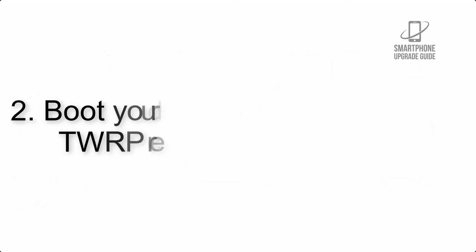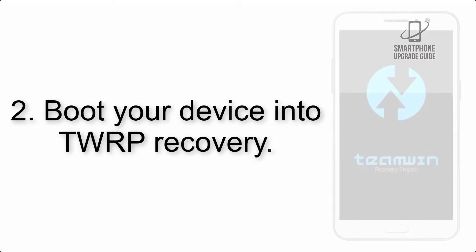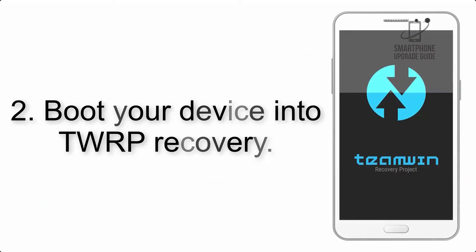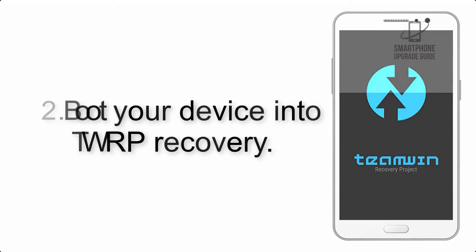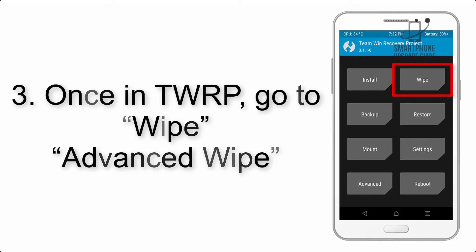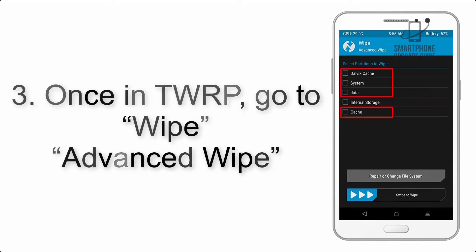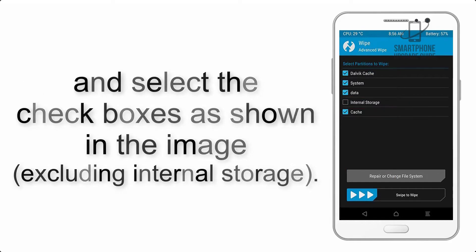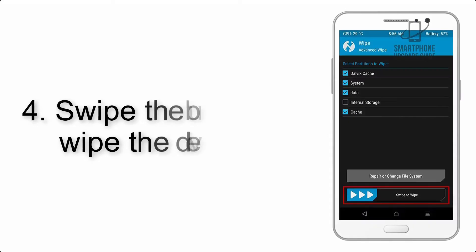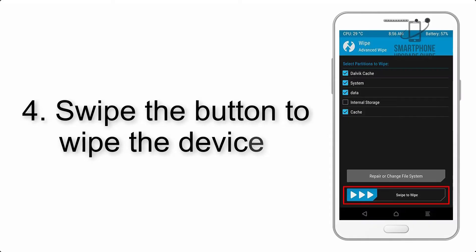Step 2: Boot your device into TWRP recovery. Once in TWRP, click on Advanced Wipe and select the checkboxes as shown in the image, excluding internal storage.